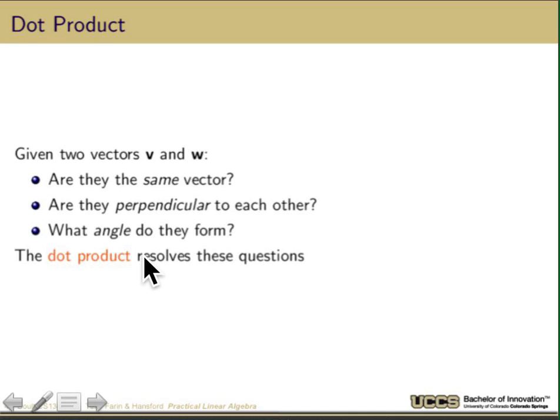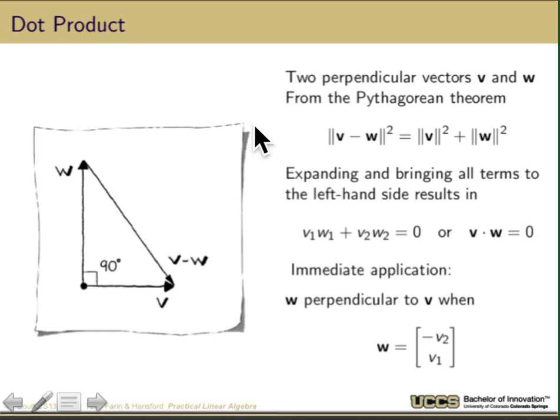Given two vectors V and W, we want to answer questions like: are they the same vector, are they parallel or perpendicular, what angle do they form? To do this, we use a tool called the dot product, which allows us to resolve these questions. We write it as V dot W — that's the dot product.